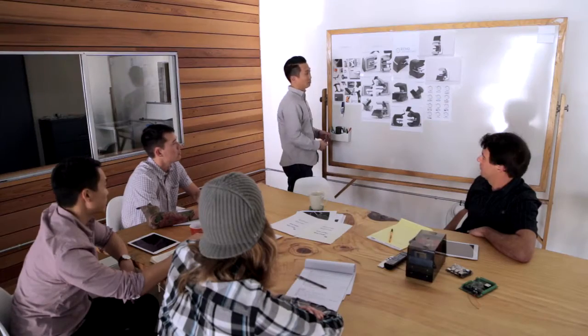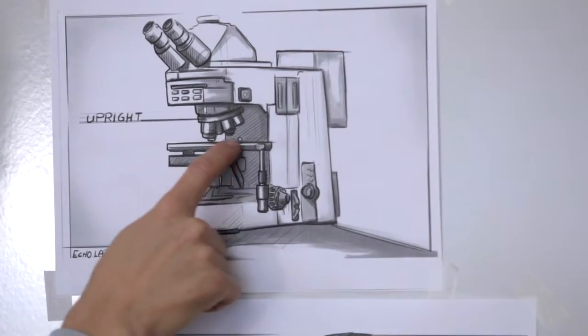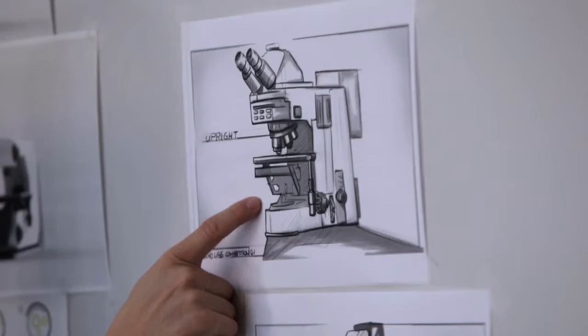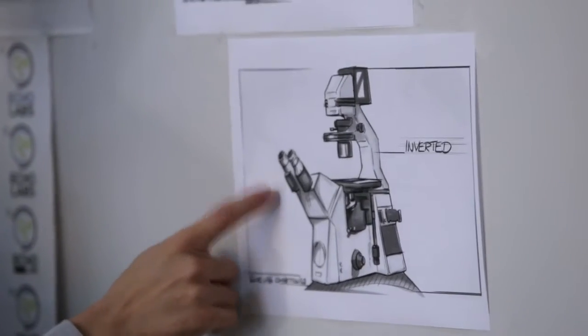You have two types of microscopes. You have an upright, which is typically used for looking at glass slides, and also an inverted, which usually looks at live samples. The thing is, many labs today actually require the use of both.